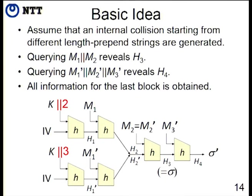If M2 equals M2 prime, it will proceed to M3, and after M3 prime he obtains sigma prime. Now he has the values of H3, H4, and the message — he collects all information for the last block. That means he can easily check whether the function is H or something else. So if this assumption is satisfied, we can easily detect which of H or R is instantiated.